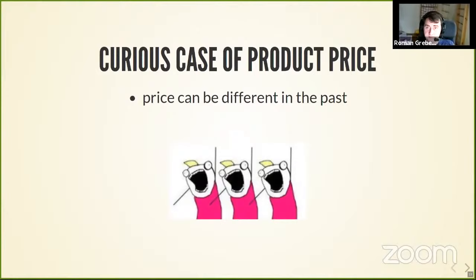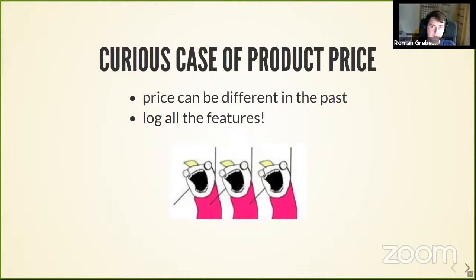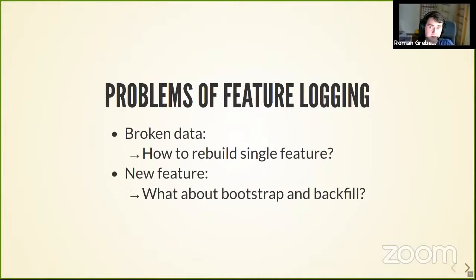There's a quite famous approach called feature logging: while you do inference, you log all the features into some storage. When you need to do retraining, you just load these features from a historical file. But then for prices, that seems fine — until you need to recompute a feature from history, or you need to bootstrap a new feature you implemented. You don't have a way to precompute all this for all the history easily.